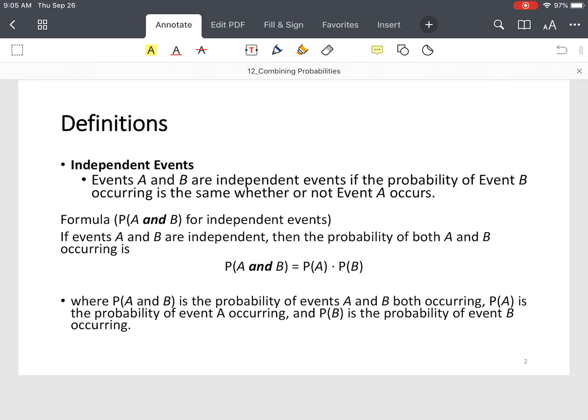First definition is what's called independent events. And what it means is you have two events where the fact that the first event has occurred does not have an impact on the second event. So if you wanted to find the probability that both of these events occurred at the same time, you would just take the probability of A and multiply it by the probability of B. Again, you assume that the first event has no effect on the second event. So that's what you call independent events.